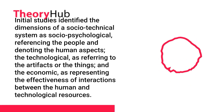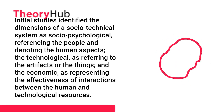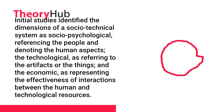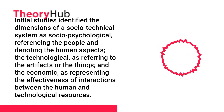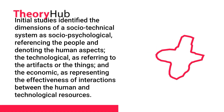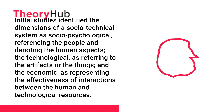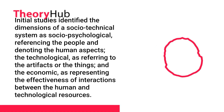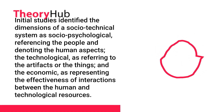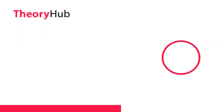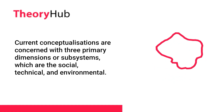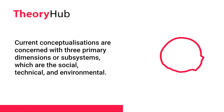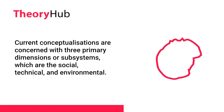The socio-technical approach distinguishes between various dimensions of a given system through the concept of a subsystem. Initial studies identified the dimensions of a socio-technical system as socio-psychological, referencing the people and denoting the human aspects; the technological, referring to the artifacts or things; and the economic, representing the effectiveness of interactions between the human and technological resources. Conceptualizations are concerned with three primary dimensions or subsystems: the social, technical, and environmental.